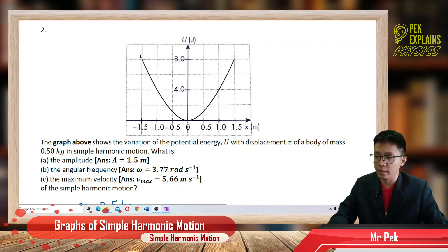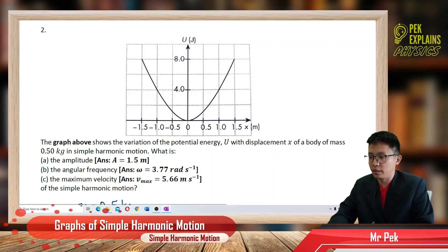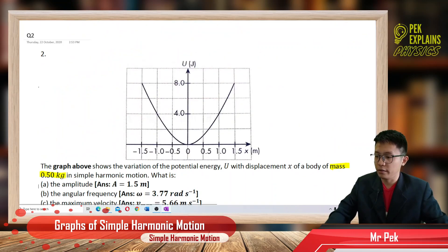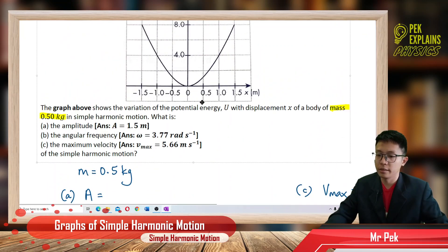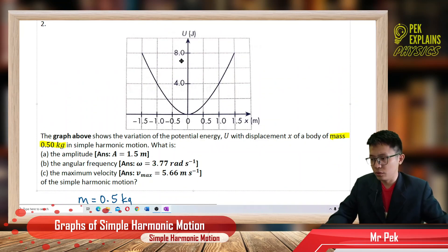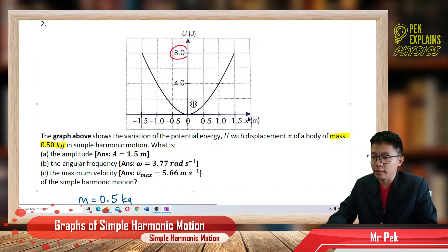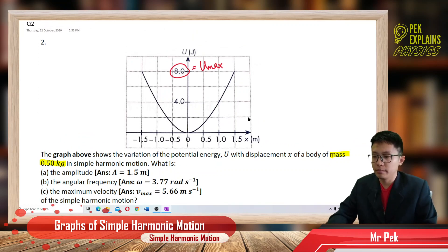What information can we extract from the graph? This is the energy versus displacement graph. First of all, this is the maximum potential energy, which is when it is maximum, it is equal to the total energy.